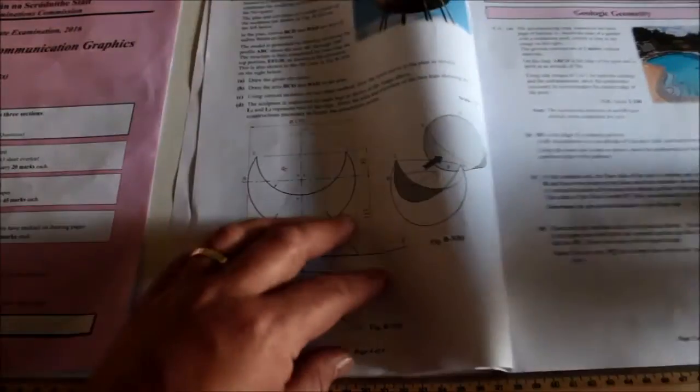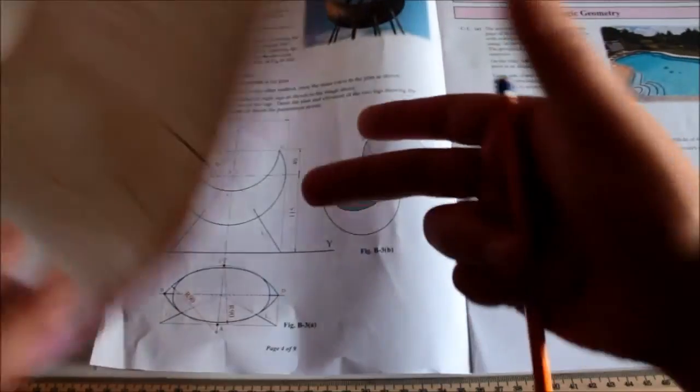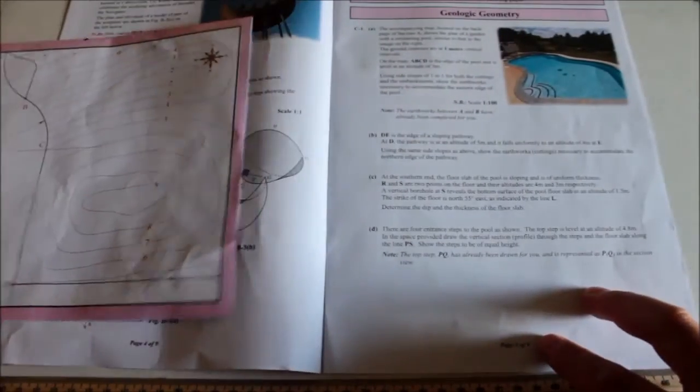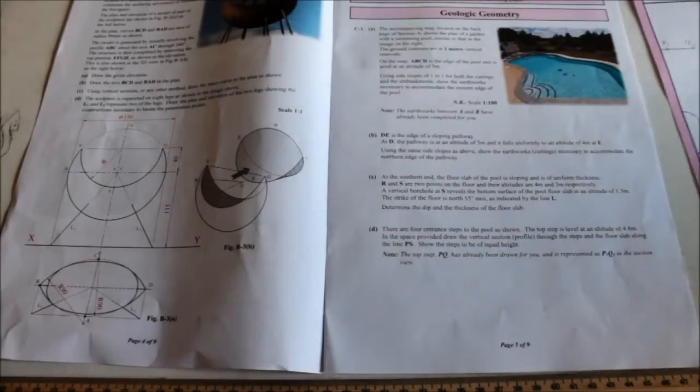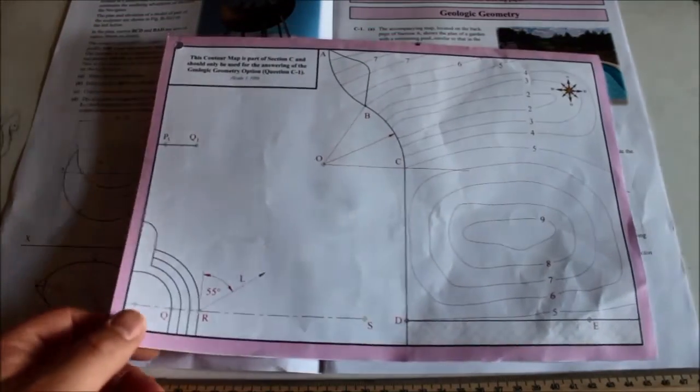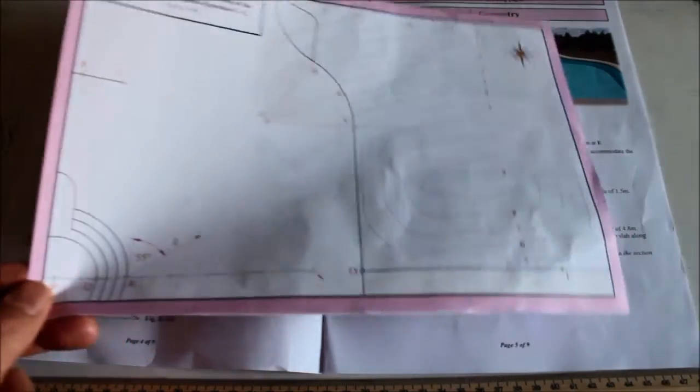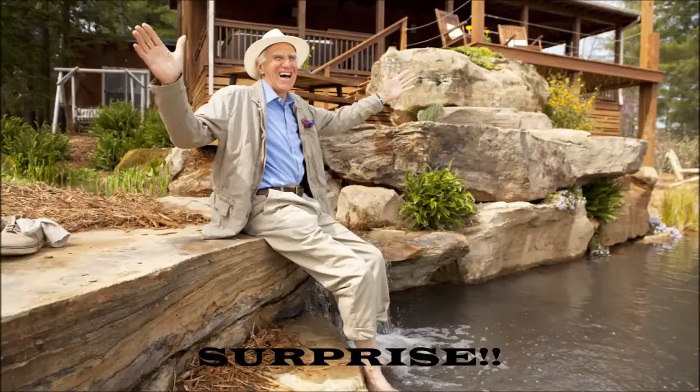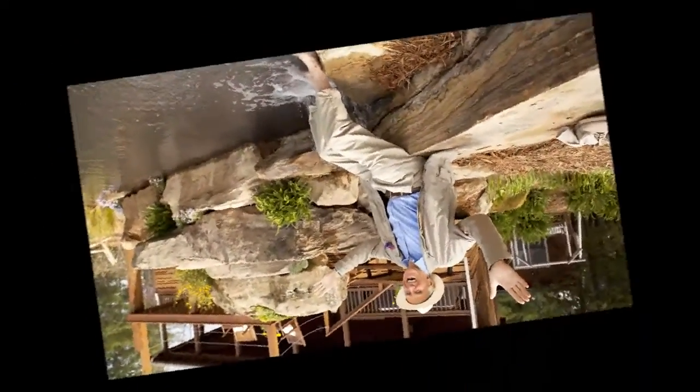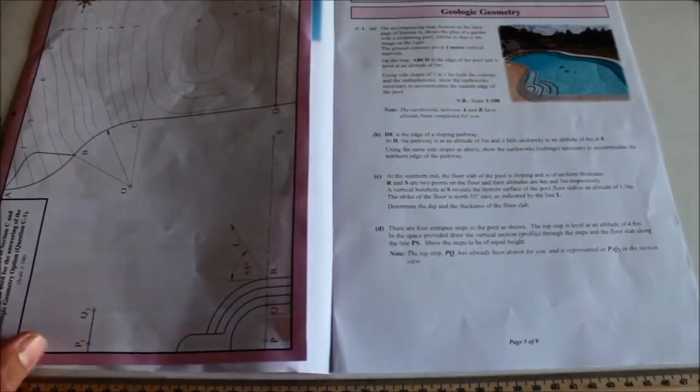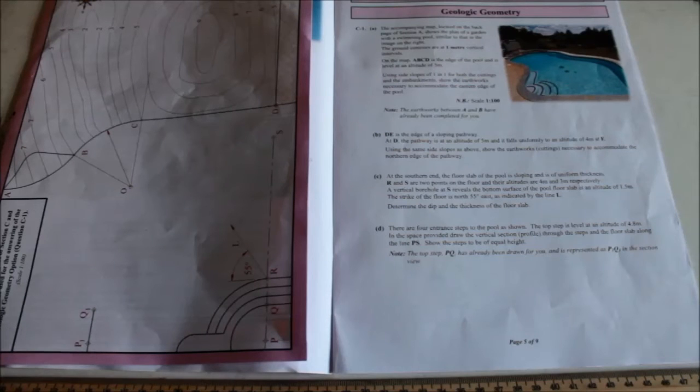Now onto the infamous section C, question C1. If you're banking on road geometry, or if you did that in section C, you got it, except that it is now pool geometry or landscape or pool master. Somebody's watching too much discovery channel. It's the same topic, same concepts, same principles.